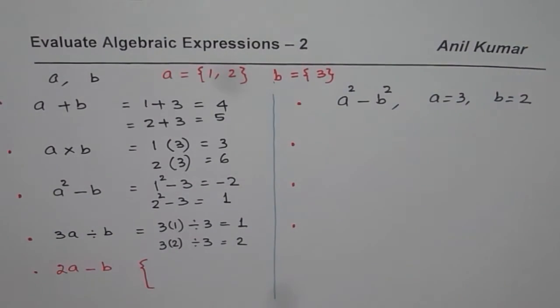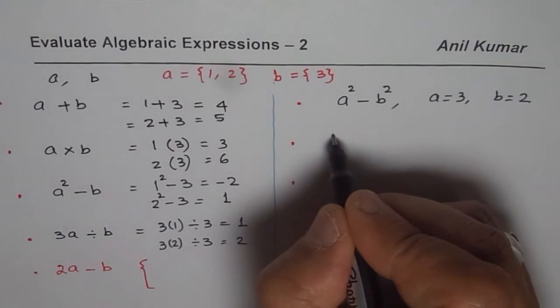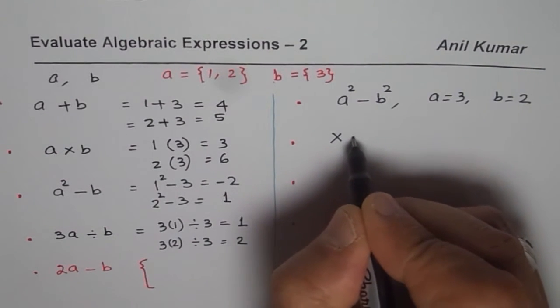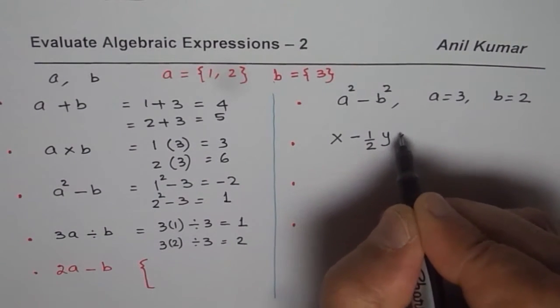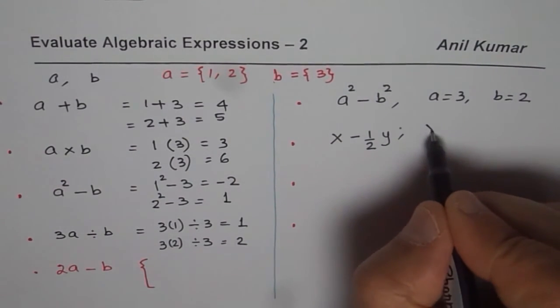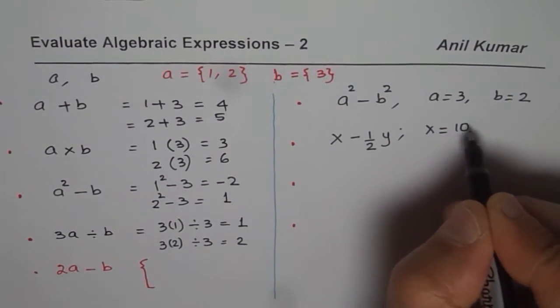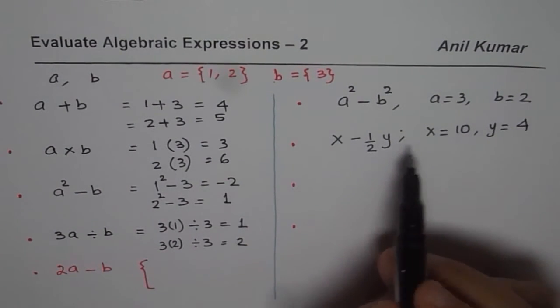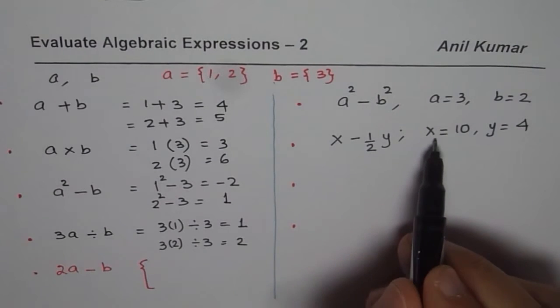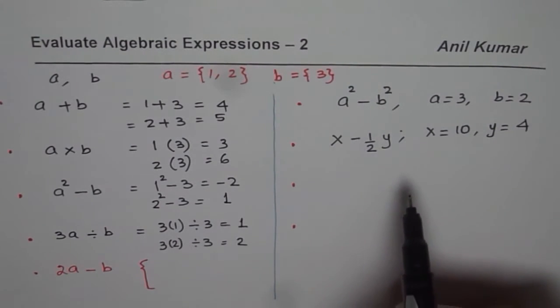I could actually use different variables. For example, I could write X minus half of Y. Now in this case, let me give you X as, let us say, 10 and Y as 4. So evaluate this expression for the given value of variables.